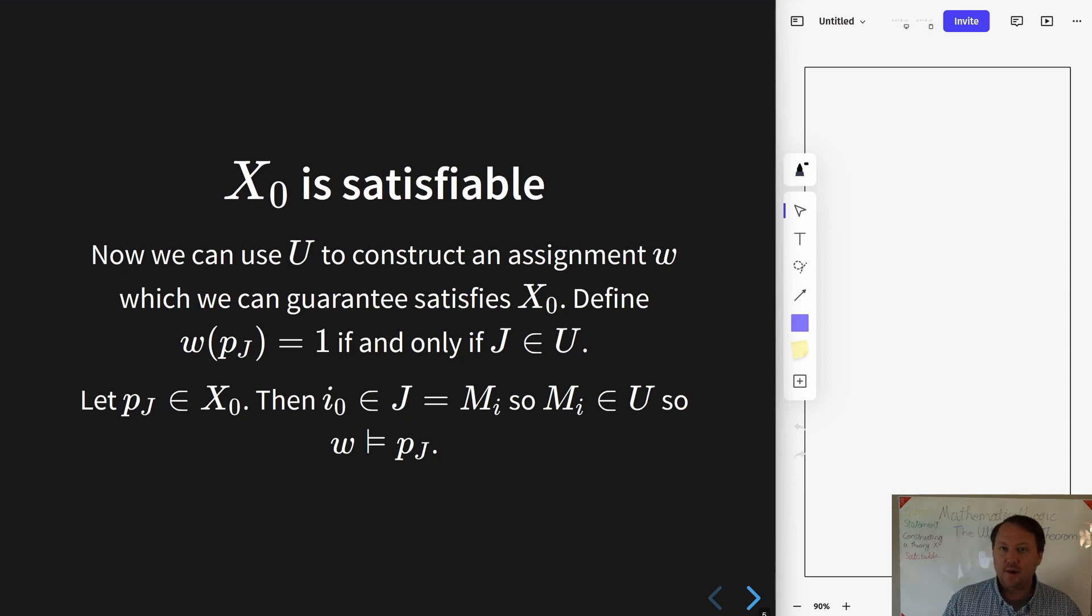So now we need to argue that the model that we have constructed satisfies X₀. So let's start, this is going to be a proof by induction. So let's show that that is true for all of the atomic formulae. So if you take an atomic formula out of X₀, we're trying to show that w satisfies it. Well, the only way that p_J is in X₀ is if J is equal to some one of those M_i's, and that thing must contain i₀, because i₀ was in the intersection of all the M's. And then since i₀ is in M_i, that is what it takes to be in U by definition of U. And because the set M_i is in U, that is the condition for the model to assign p_J the value 1. So we now know that the model satisfies p_J.